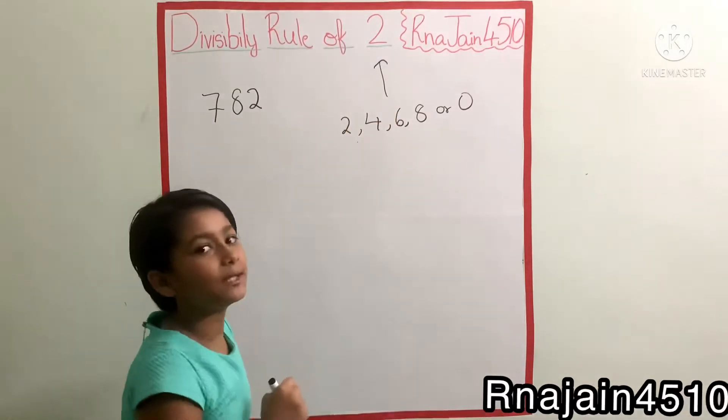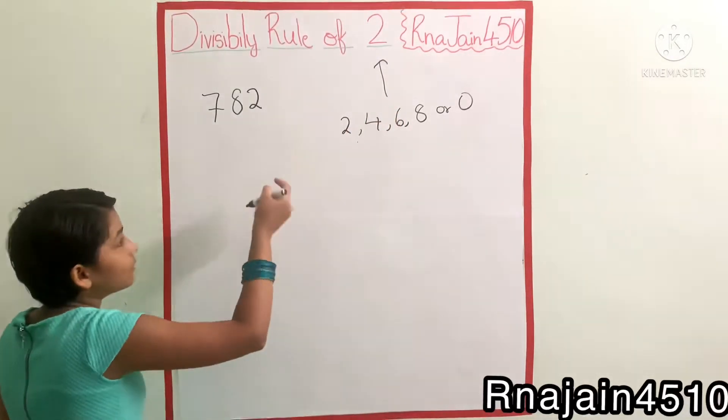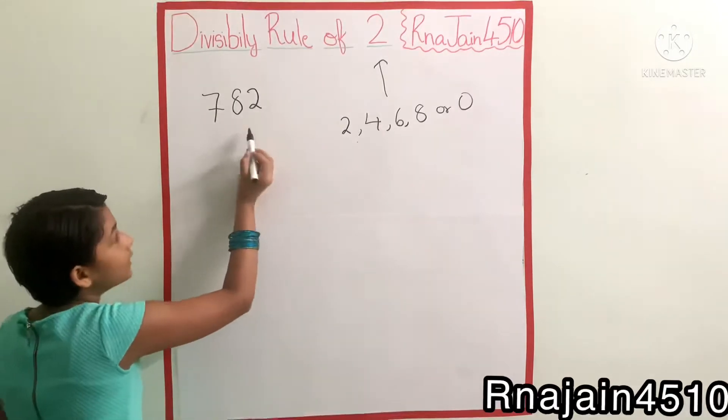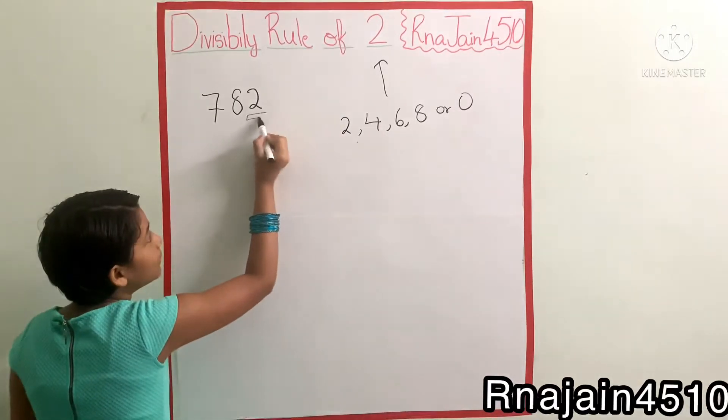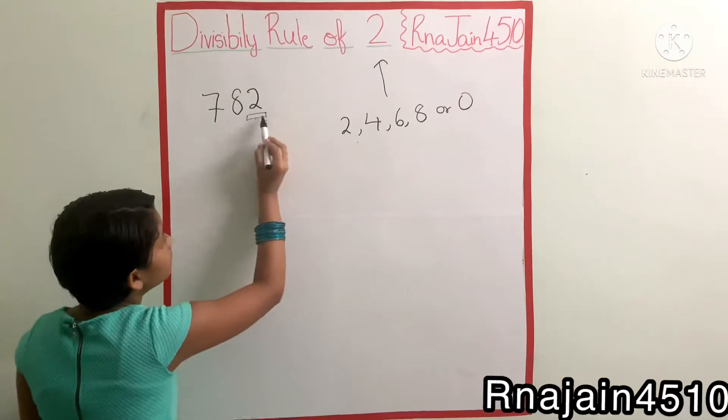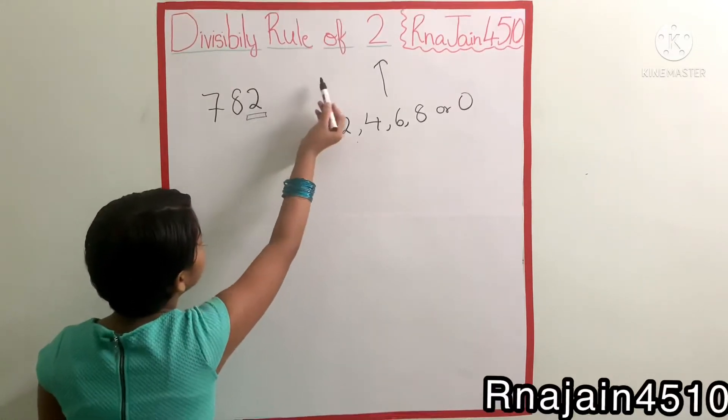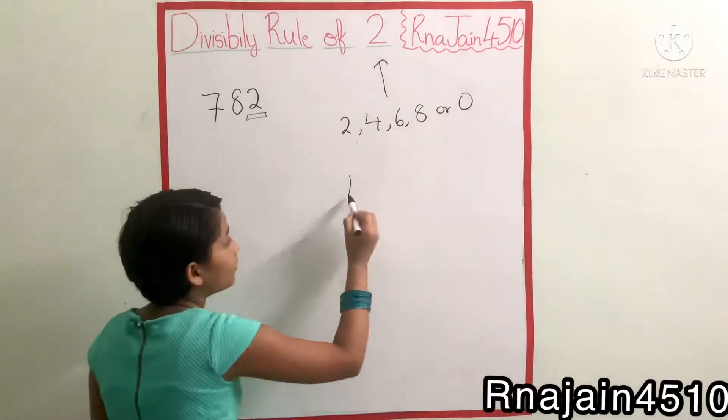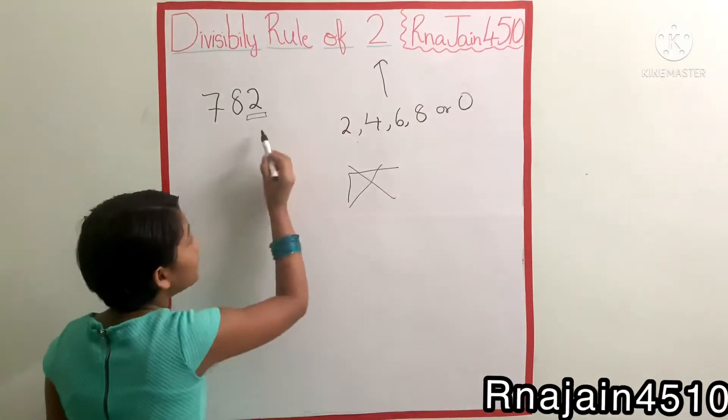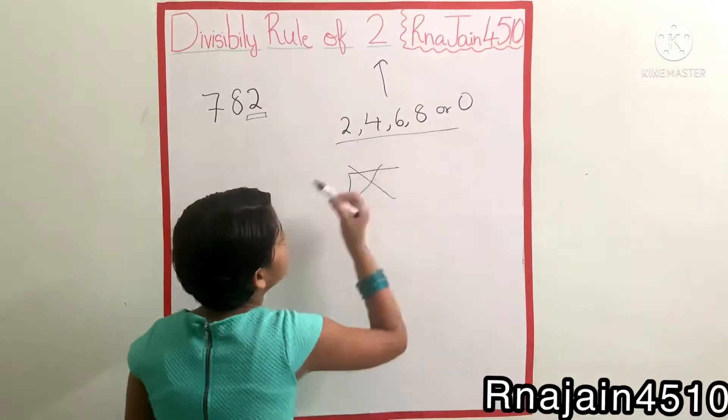So here we will notice only the end number. So is two coming here? Is it divisible by two or not? You have to not do it in this way, no. You may do it in this rule way.